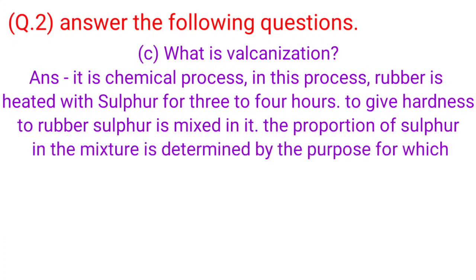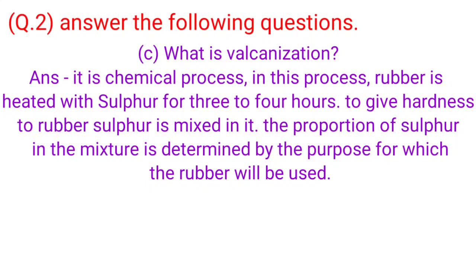C. What is vulcanization? Answer. It is a chemical process. In this process, rubber is heated with sulfur for 3 to 4 hours. To give hardness to the rubber, sulfur is mixed in it. The proportion of sulfur in the mixture is determined by the purpose for which the rubber will be used.